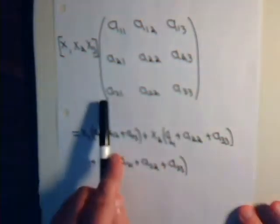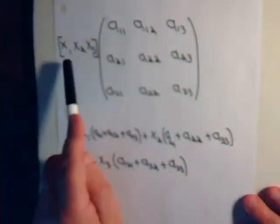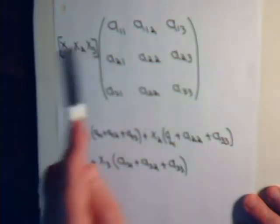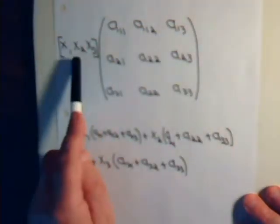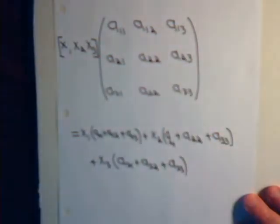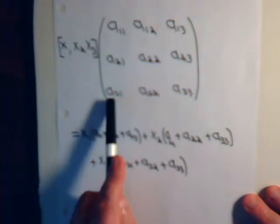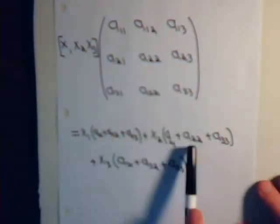As we discussed in the previous video, if you're going to multiply a matrix by a row, we have to do it from the left, so that the first element multiplies the entire first row, the second element multiplies the second row, and the third element multiplies the third row, giving us this expression.